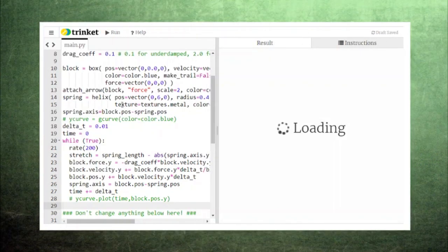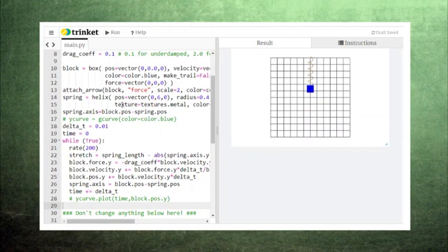Running the code with a small value for the drag coefficient shows similar behavior to what we saw before with the block oscillating up and down. But the distance over which the block oscillates decreases because air resistance is always working to slow the block.